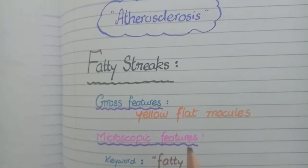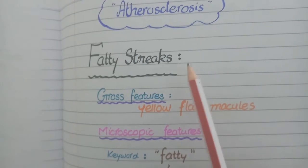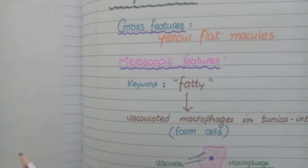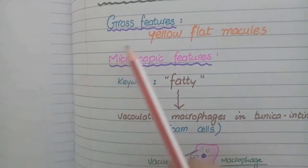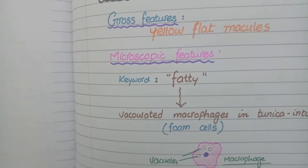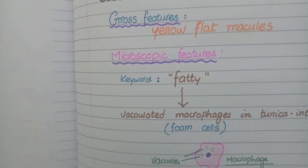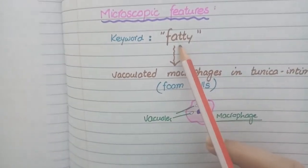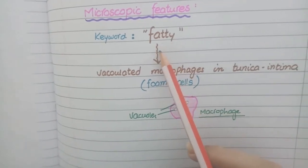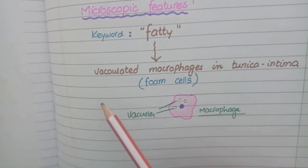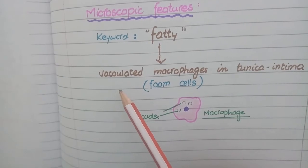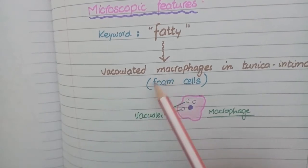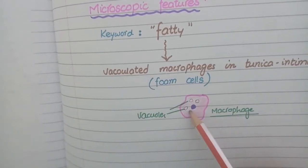Now we will study the pathological features of atherosclerosis. First, the pathological features of fatty streaks, which are the precursor lesions of atherosclerosis. On gross specimen of a vessel, fatty streaks are visible as yellow flat macules — they do not project into the lumen of the vessel and do not cause stenosis. Microscopically, the key word is fatty: fat does not stain on microscopic slides, so instead of fat you see empty vacuoles in the cytoplasm of macrophages.